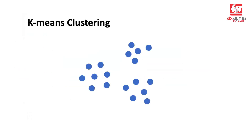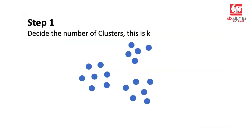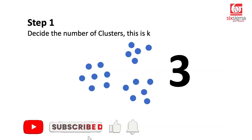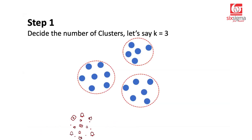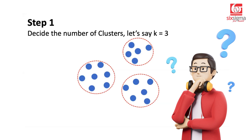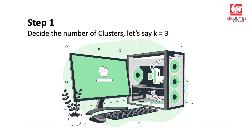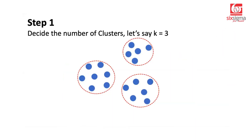Step one in k-means clustering is that you should know the number of clusters you want to create. Let's say we decide that the number of clusters we want are three. The moment you look at this data, you would probably think it's very simple — if I need three clusters, I can just visually tell you which are the three groups which seem closer to each other and different from the rest. But the question is, how would a computer, a machine, decide something like this? There is a logical approach to this, and that's what we're going to discuss now.